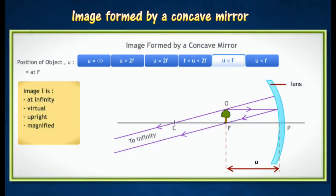When the object is placed at F, its image will appear at infinity. The image formed is virtual, upright and magnified. This situation is usually used as a light reflector in searchlights or spotlights.